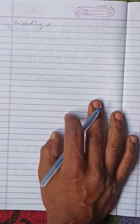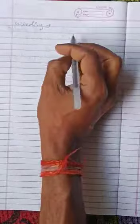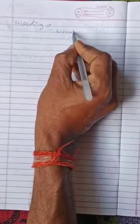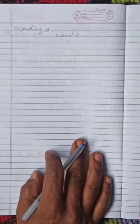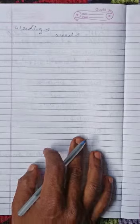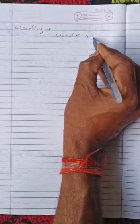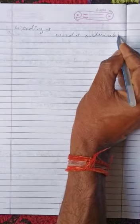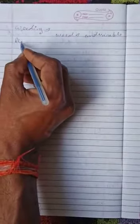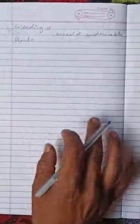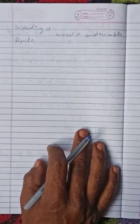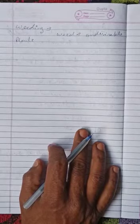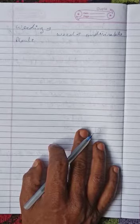Weeding, what happens? First of all, we will have to understand the word weeds. Weeds are the undesirable plants. Undesirable plants growing naturally along with the crop are known as weeds.